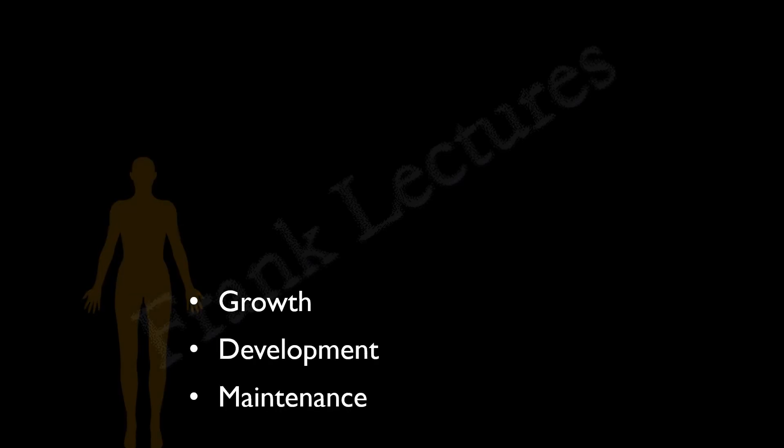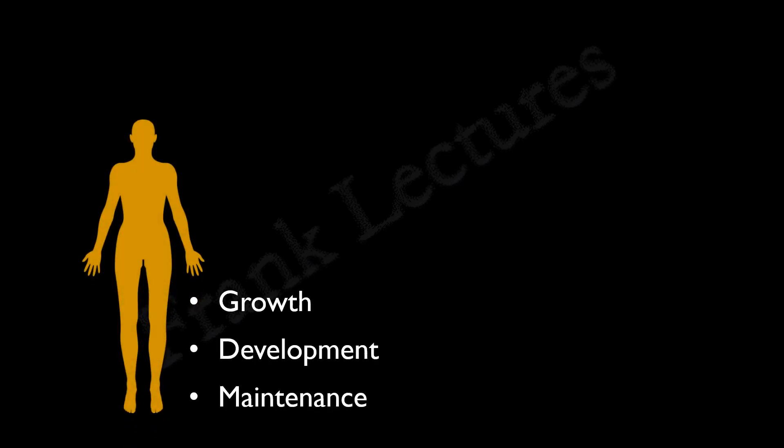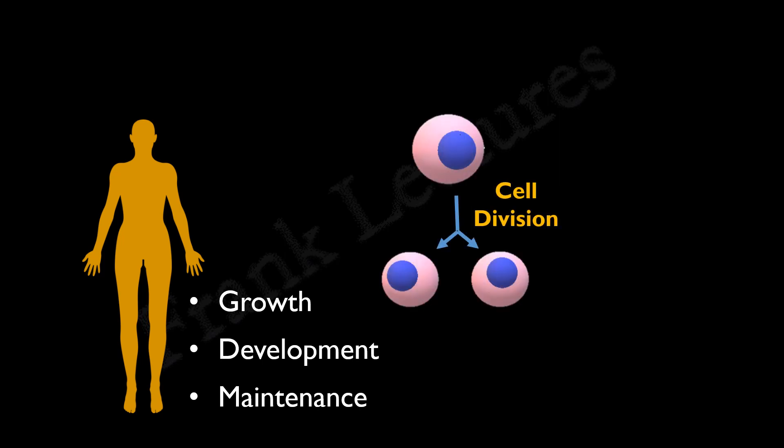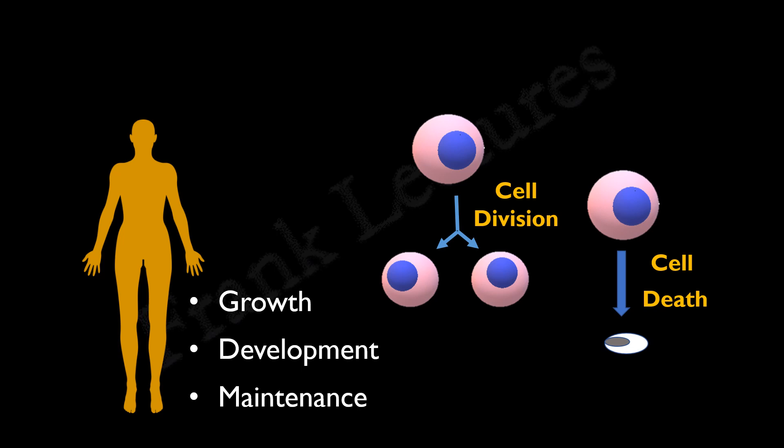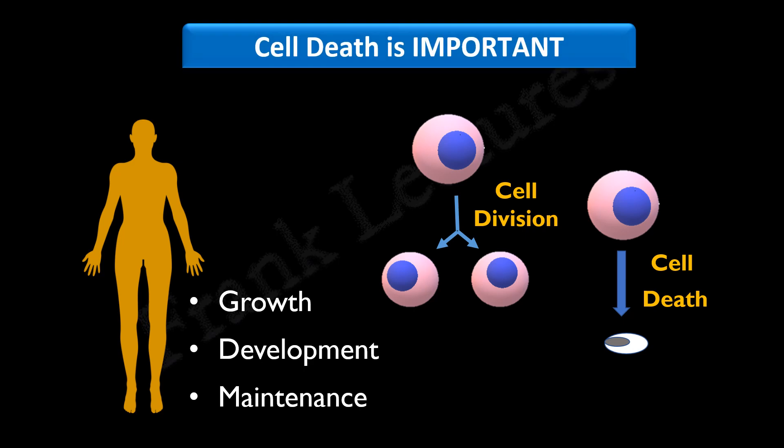We understand that growth, development, and maintenance are important characteristics of multicellular organisms. These characteristics depend not only on cell divisions, but also on cell deaths. For example, the size of a tissue is maintained because cells die at the same rate as they are produced. Therefore, cell death is important.